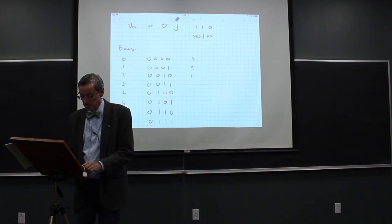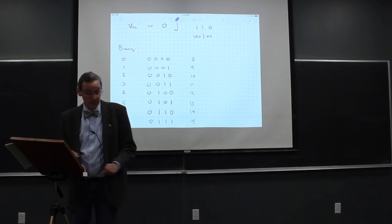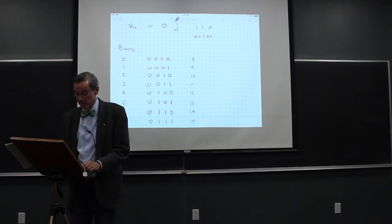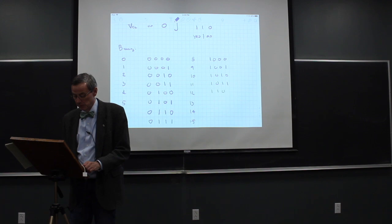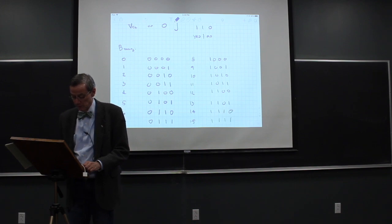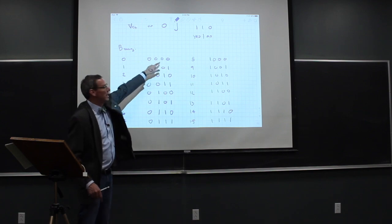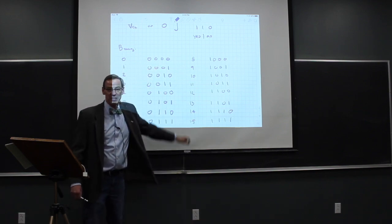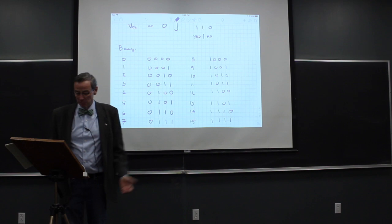Continuing: eight is one-zero-zero-zero (one eight, no fours, no twos, no ones), nine is one-zero-zero-one (eight and a one), ten is one-zero-one-zero, eleven, twelve, thirteen, fourteen, and fifteen is one-one-one-one. So with four binary bits we can count from zero to fifteen. That's how we count in binary.